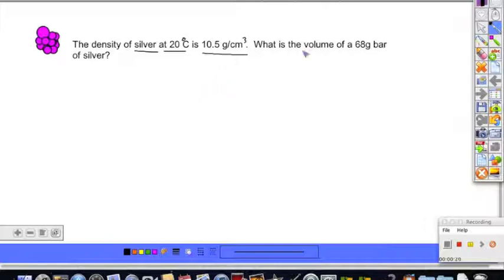What is the volume of a 68 gram bar of silver? So first of all, you want to write down what you know and what you don't know. Density, in this case for silver, is 10.5 grams per cubic centimeters.